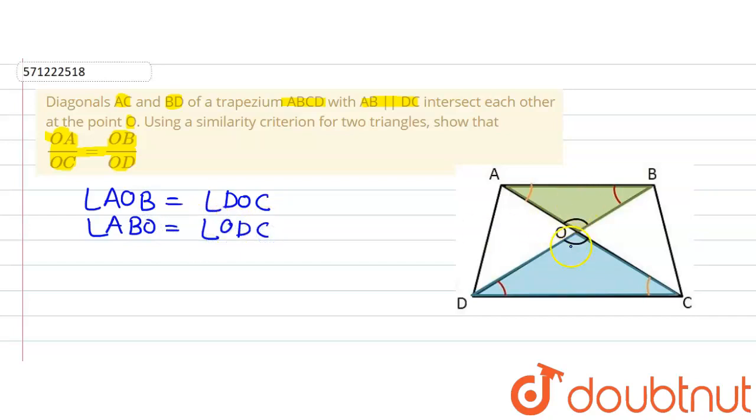Now in both these triangles, triangle AOB and triangle DOC, we have two angles which are equal. We know that when two triangles have two corresponding angles equal, then we can say that both the triangles are similar.